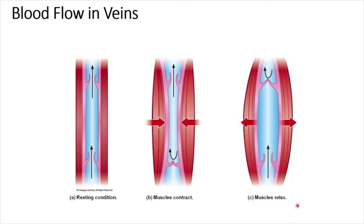When muscles relax, the veins expand, the lower valve opens, and blood from below fills the expanding vein, while the upper valve closes and prevents backflow of blood. Another factor that enhances blood flow in veins is respiratory movements. During inhalation, thoracic pressure falls and the chest expands, and the thoracic venacava also expands and fills with blood.